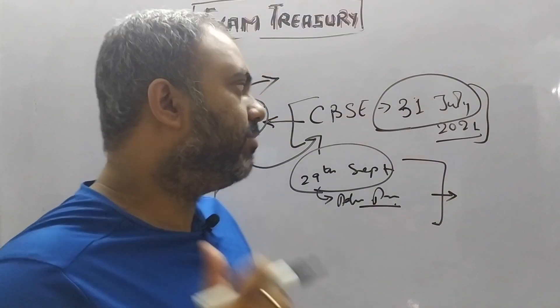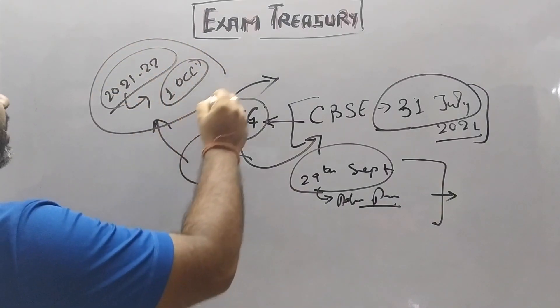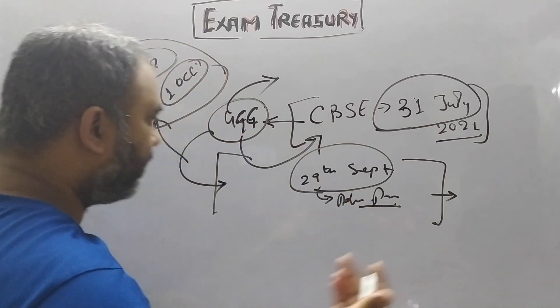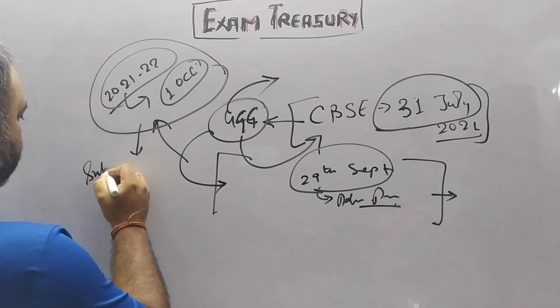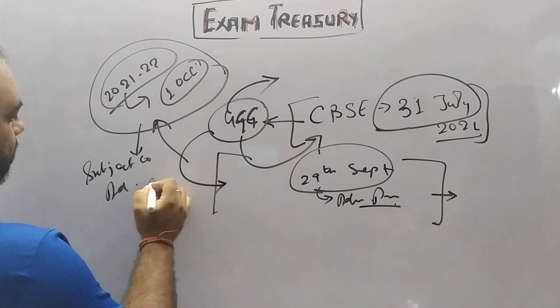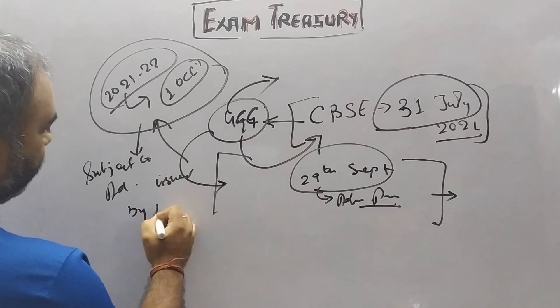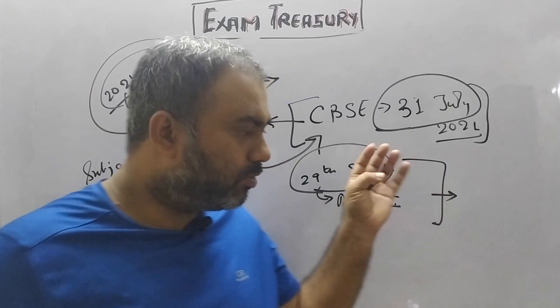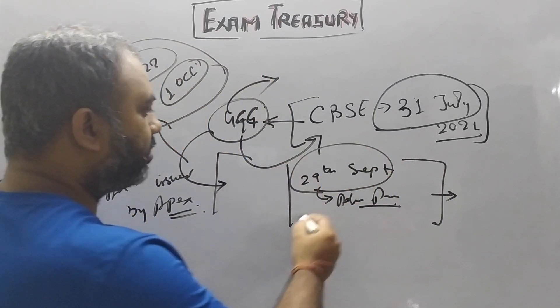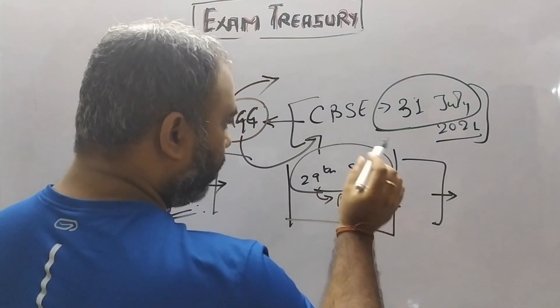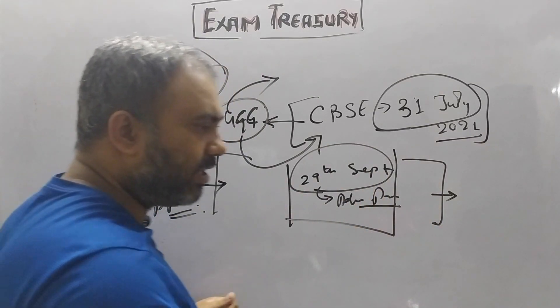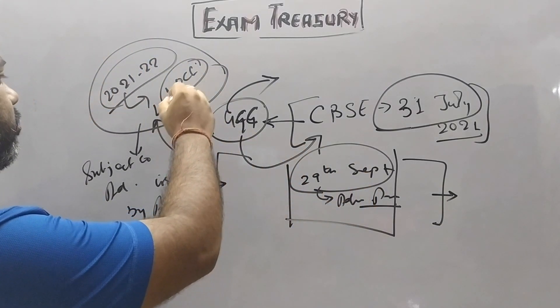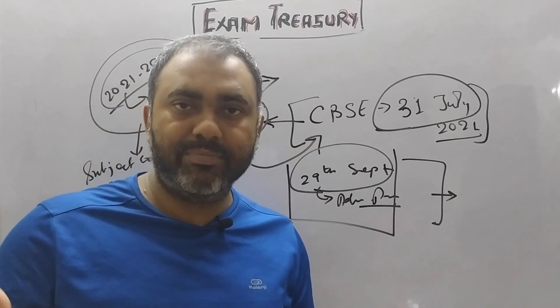But the catch in UGC's guidelines is that it is subject to advisories issued by the APEX authorities. UGC has said that colleges and universities have to follow this timeline - by September 29th you have to complete the admission process, entrance exams, merit-based selections, and results, so that you can start the academic session from October 1st 2021.